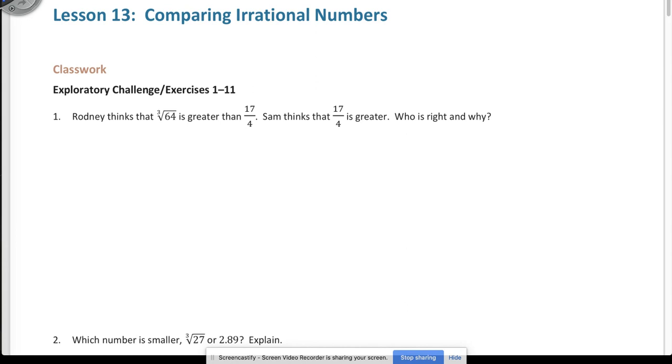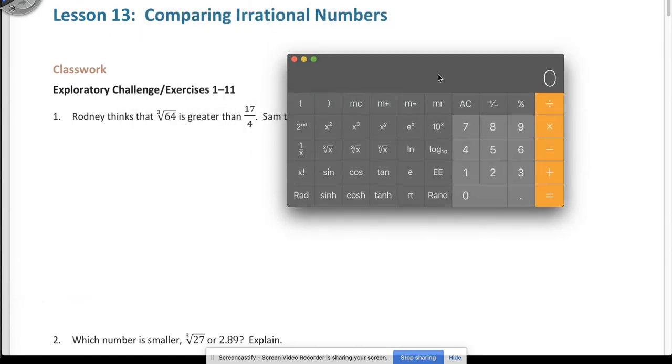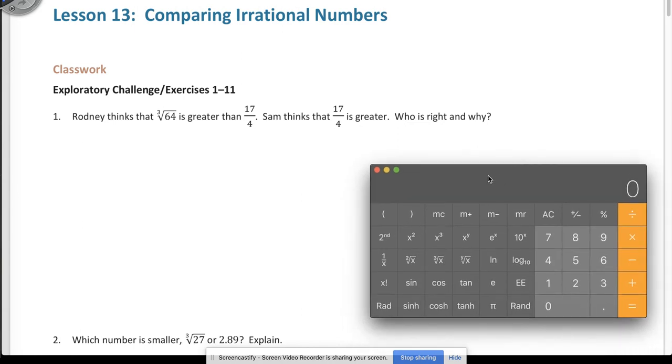Number one, Rodney thinks that the cube root of 64 is greater than 17 fourths. Sam thinks 17 fourths is greater. So who's right? Well, let's get our calculator ready. I'm going to pull it up here, clear it out. So we have the cube root of 64. We're going to do 64 cube root, and I get 4. So let's write that down. The cube root of 64 gives me 4.